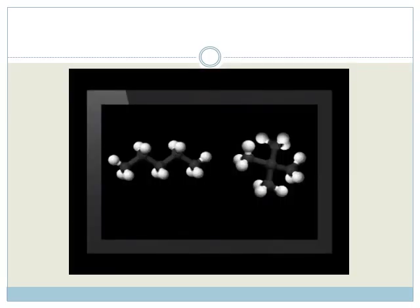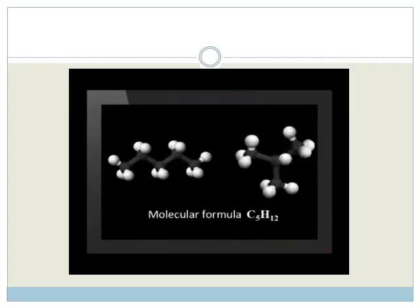The structural formulae of organic molecules shows us the exact positions of the atoms, but sometimes the atoms in a molecule are not always at the same position. Here is an example. Can you work out the molecular formula for each of these substances? Did you find that they both have the same molecular formula? C5H12.